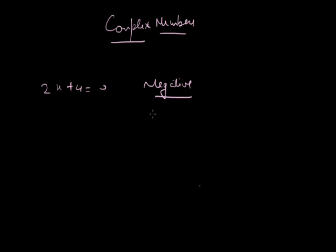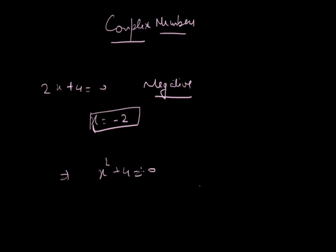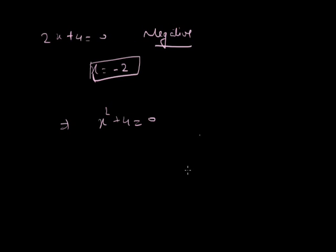Numbers to the left of the number line are negative. So if negative numbers exist, then the solution of 2x plus 4 equal to 0 is x equal to minus 2. In the same way, some equations are like x squared plus 4 equal to 0. Now, for x squared plus 4 equal to 0, we know that there is no real solution.